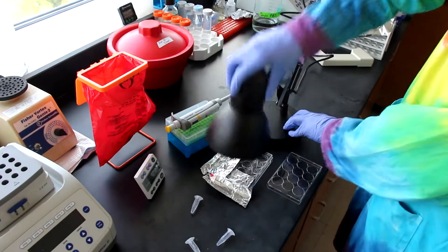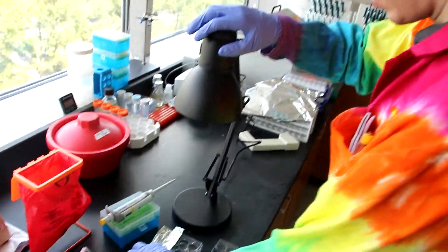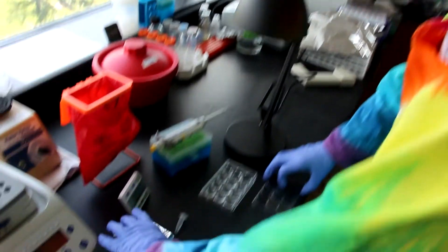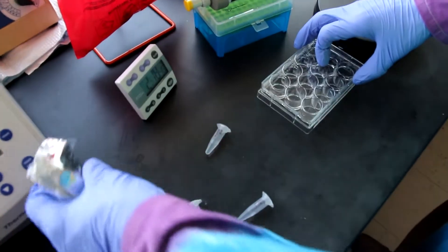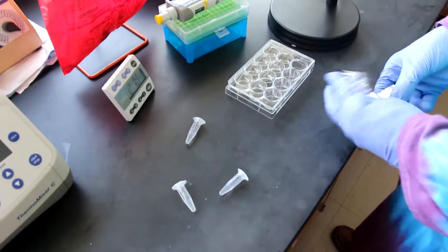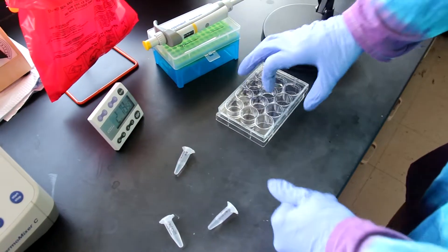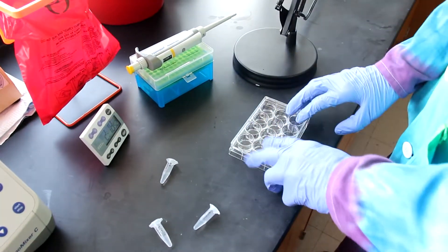When you're done, turn off the UV lamp, remove your pieces of foil, place them in the biohazard, and return the lid of your plate. You can then take your plate of cells to a plate reader to quantify fluorescence.